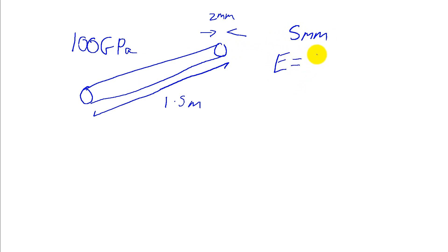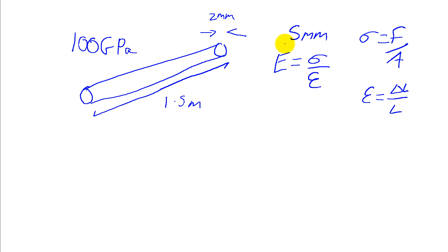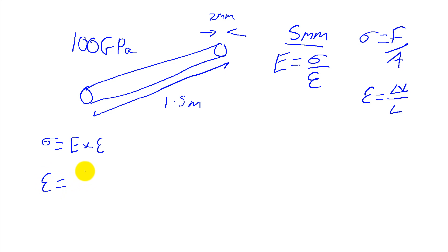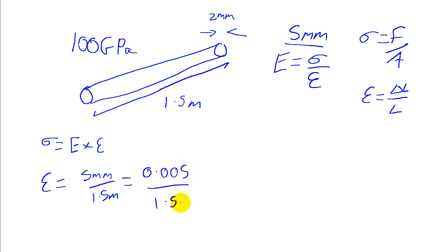We know our Young's Modulus is stress over strain, our stress is force per area, and our strain is change in length over original length. To find the force required to cause this extension, we need to find the stress first. To get the stress we use the Young's Modulus and the strain, where strain equals change in length over original length. So our strain is 5mm over 1.5m, which is 0.005m over 1.5m, giving us 3.3 × 10⁻³.